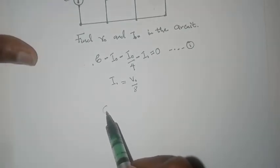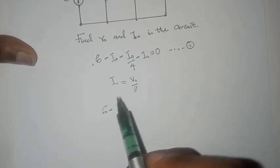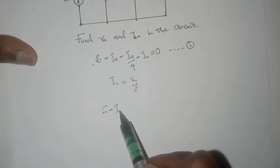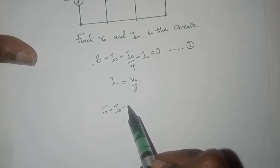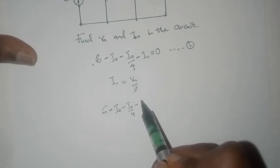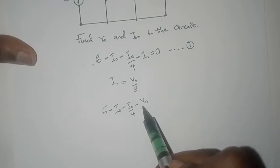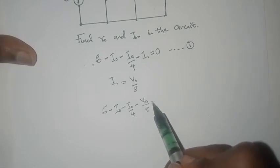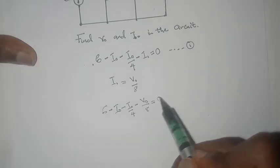This will give us 6 minus I0, I0 divided by 4 minus V0 divided by 8, should be equal to 0.